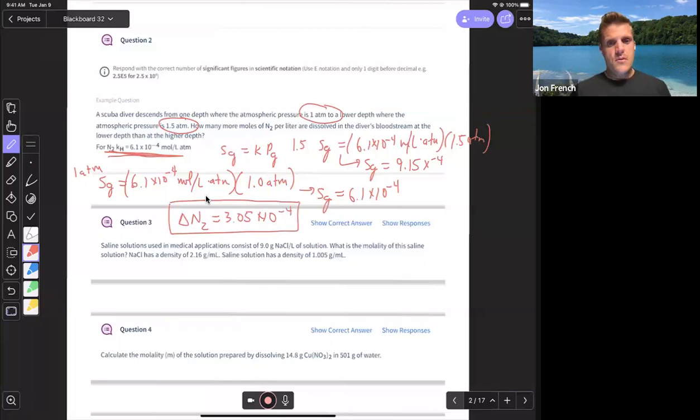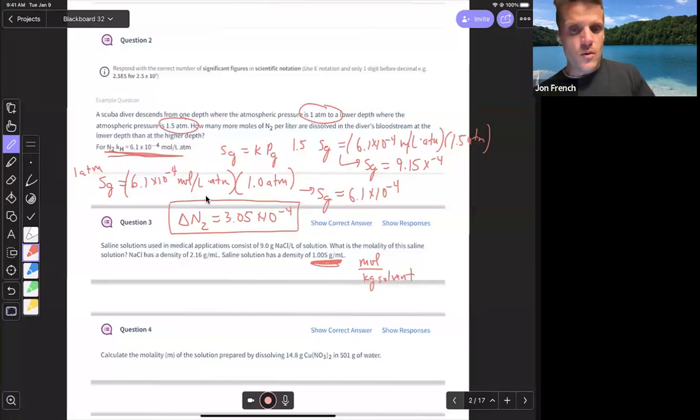For question three, we did this on Friday and a couple of people had some questions about this. I've gotten a few emails about question three as well. Saline solution used in medical application consists of nine grams of sodium chloride per liter of solution. What is the molality? Molality is moles per kilogram solvent. So the mistake that people are making is they're just assuming, oh okay, I've got one kilogram because it's telling me I've got one liter. Well, the mass, the density of this is not one because it's not just pure water. It's a sodium chloride solution. I don't need to know the density of NaCl. That has nothing to do with this calculation.